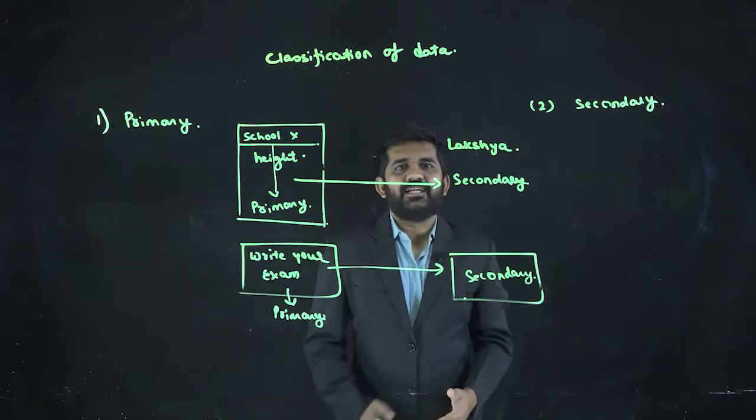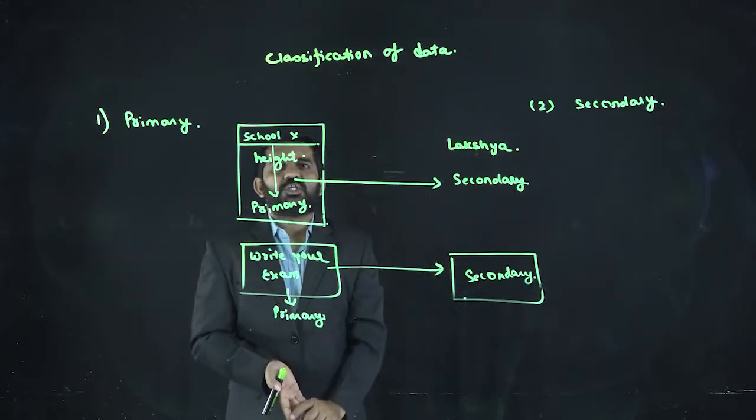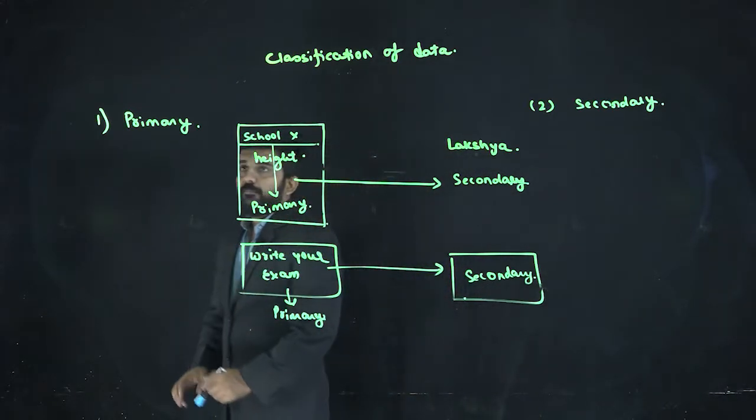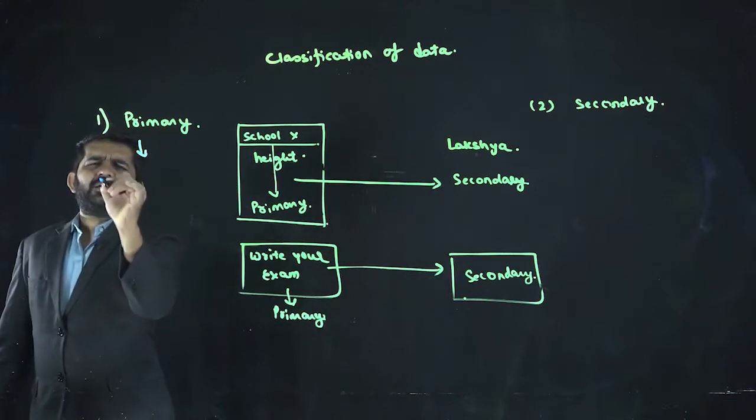So primary data, secondary data - classification of two types of data. Now, primary data, how can it be collected?